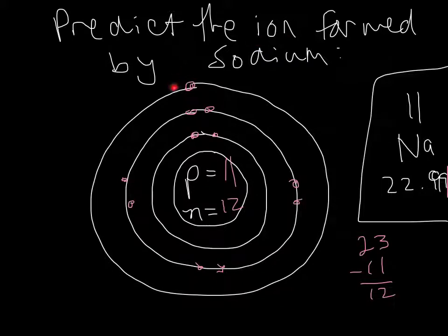Now I need to predict the ion. So what I need to do is I look at the outermost orbit, or the valence orbit, and I see that there's one electron in this orbit. And I think to myself, is it going to lose the one electron or gain seven more to get a full orbit? And I know that it's going to lose the outer orbit.